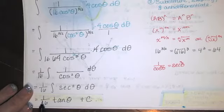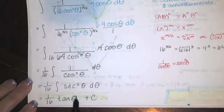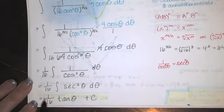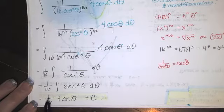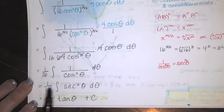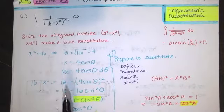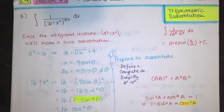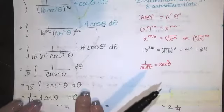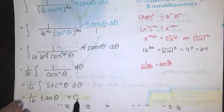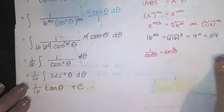This antiderivative is expressed in terms of theta, but we want the answer in terms of x since our original integral was a function of x. The trigonometric substitution was just a tool to find that function of x. So after antidifferentiating, our goal is to write this expression entirely in terms of x, which we do by drawing and labeling a right triangle.